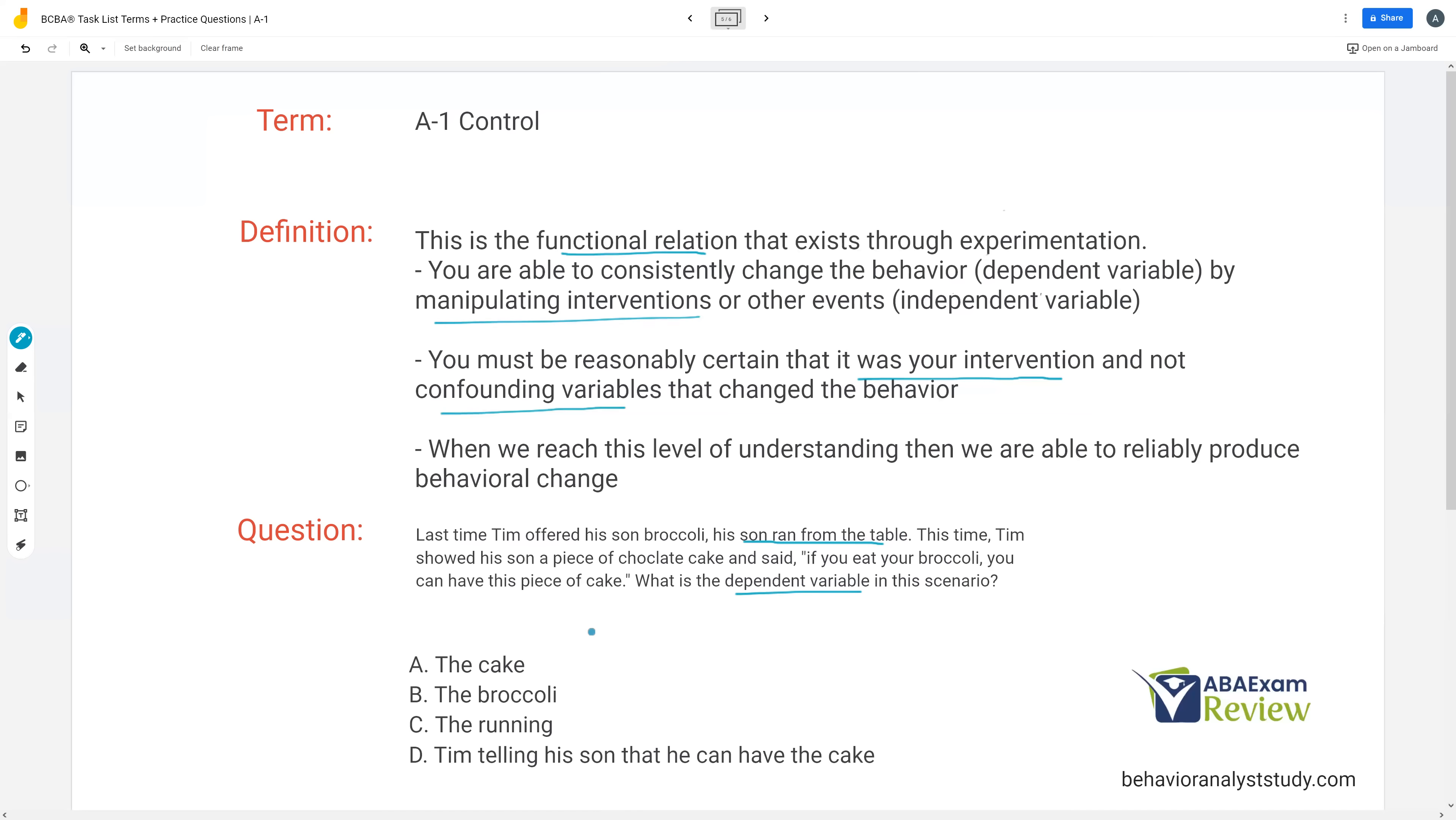So the dependent variable in this scenario is not A, the cake. We're not trying to change the cake or change the broccoli. What Tim is trying to change is the running. And he's trying to change that running through his intervention of if you eat your broccoli, you can have this piece of cake.